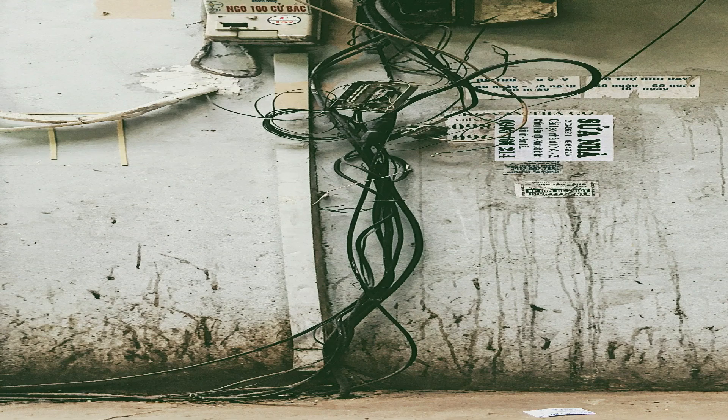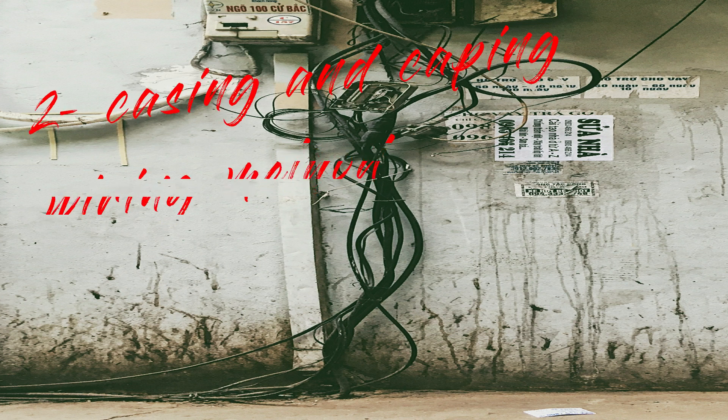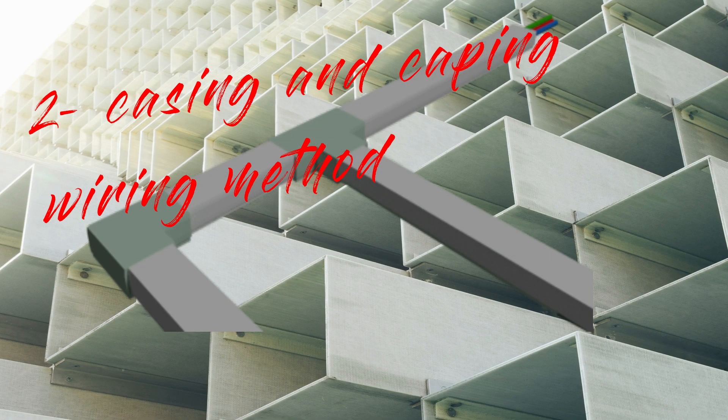The second type of internal connection is the casing and capping wiring method, which is fairly similar to the cleat wiring method, except that the wires are carried through a casing enclosure. This method is simple but highly prone to fire, most especially when there is short circuiting.